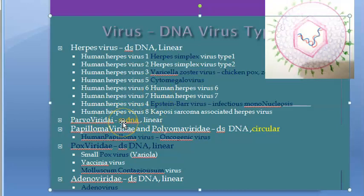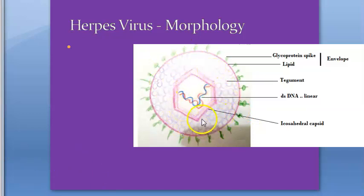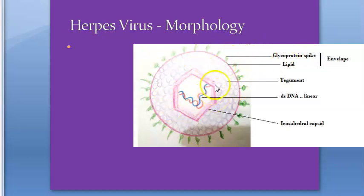Two exceptions to remember: parvo has single-stranded DNA because it is very small, and papilloma has circular DNA — 'papil-o-oma, circular.' Looking at the morphology diagram: the nucleocapsid is the pink hexagon shape with icosahedral symmetry. The outer pink line is the envelope, consisting of a lipid layer and glycoprotein spikes.